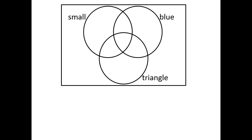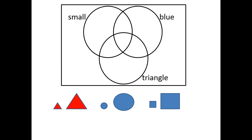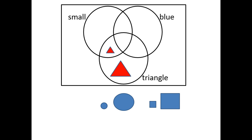Now let's take a look at another Venn diagram. We're going to identify three attributes: small, blue, and triangle, and try to determine where these shapes fit. The first triangle is small, it's not blue, and it is a triangle, so it goes here. The second shape is not small, it is not blue, but it is a triangle, so it goes here. The next shape is small, is blue, but is not a triangle, so it goes here.